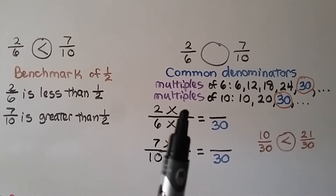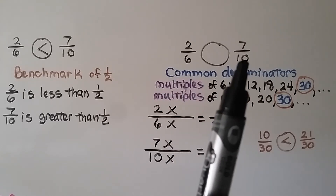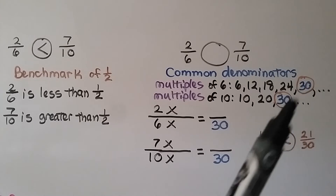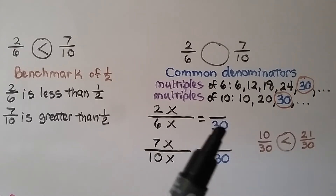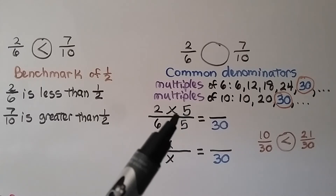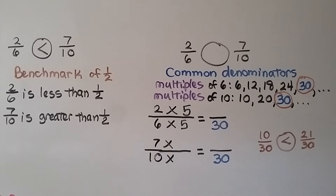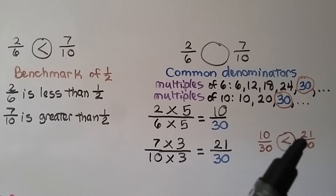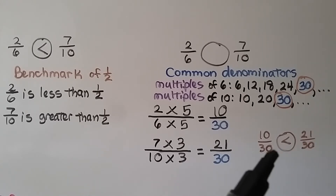We can compare these same fractions using common denominators. We see a denominator six and a denominator ten, so we write the multiples of six and ten. We can see they meet at thirty. Six times some number is equal to thirty — that's six times five. We multiply the numerator by the same number: two times five gives us a new numerator of ten. We do the same for seven-tenths: ten times three is thirty, and seven times three is twenty-one. Now we're comparing ten-thirtieths to twenty-one-thirtieths. Ten is less than twenty-one, so two-sixths is less than seven-tenths.